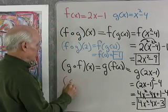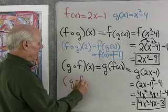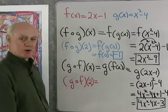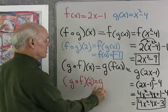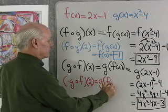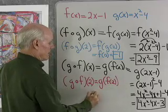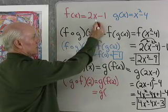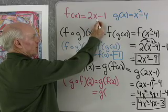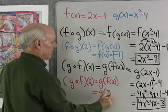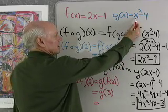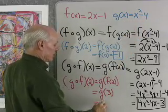How about if I have g composed with f of 2? Well, we can just go through the whole process. I'll use the definition, g of f of 2. That's going to be g of, well, f of 2, I put 2 in here, 2 times 2 is 4, subtract 1 will be 3. And so, g of 3, I'll put 3 in here and get 9, subtract 4 is going to be 5.